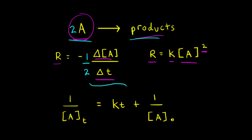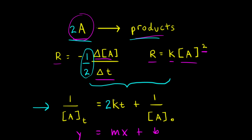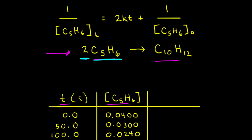When we set these two rates of reactions equal to each other and use calculus and integrate to get our integrated rate law, because of this one half, we end up with a two in front of K. So thinking about Y equals MX plus B, the slope of the line is equal to 2K. For our reaction, we can write the integrated rate law as one over the concentration of cyclopentadiene at some time T equals 2KT plus one over the initial concentration of cyclopentadiene.